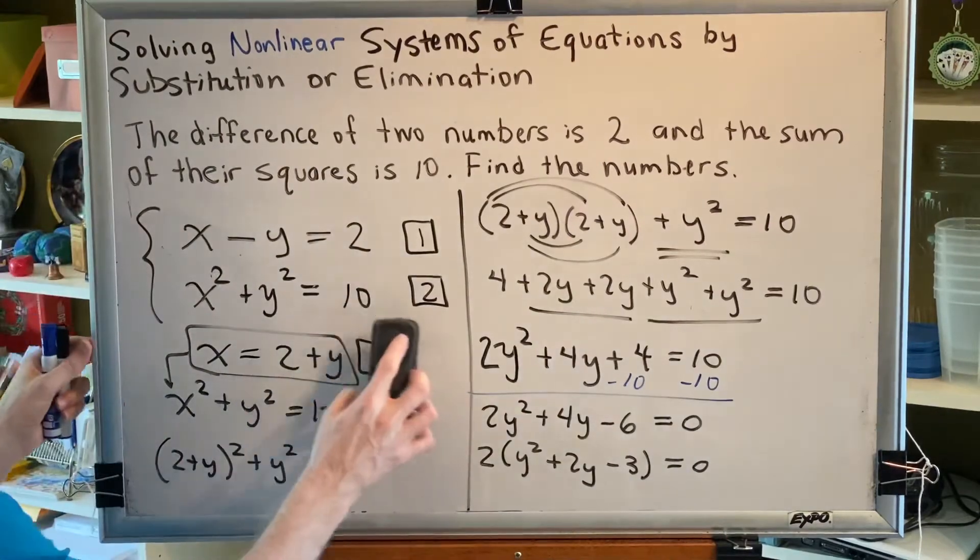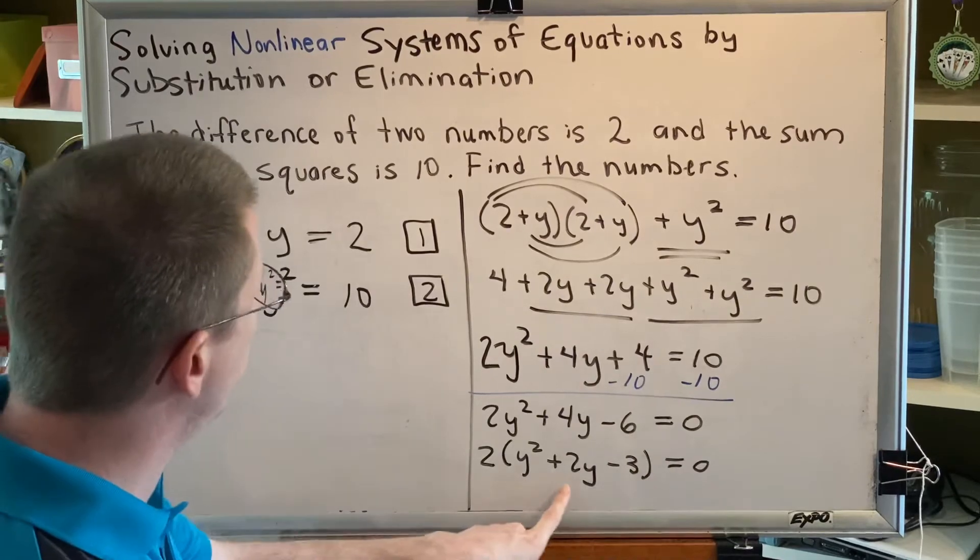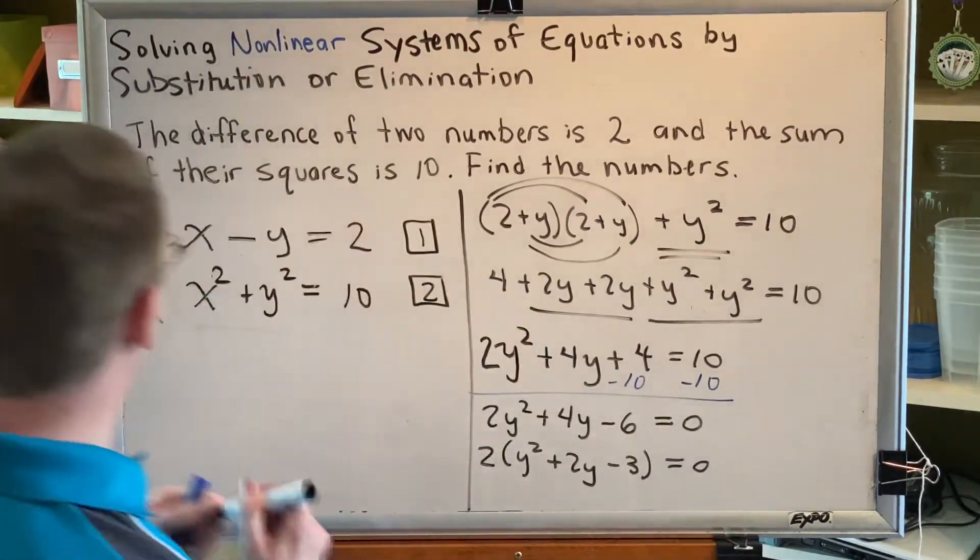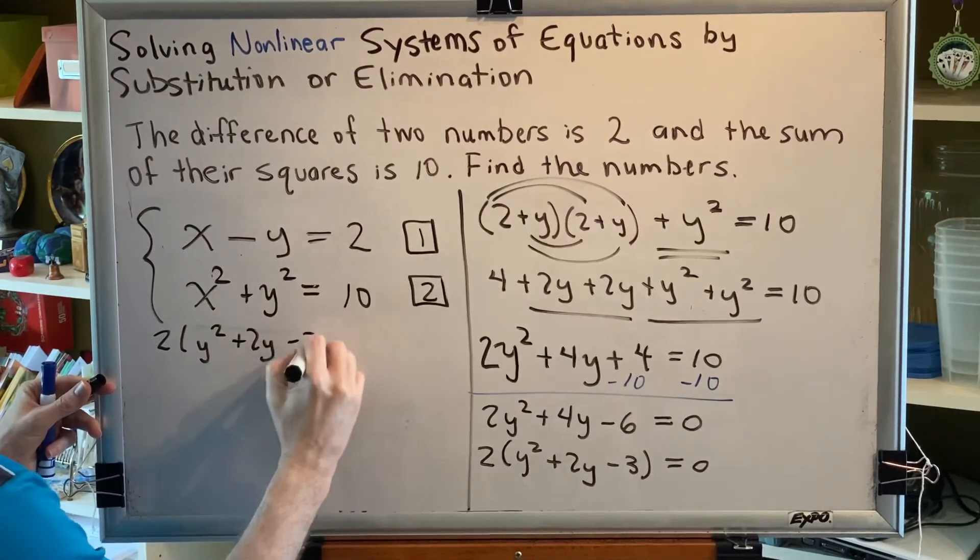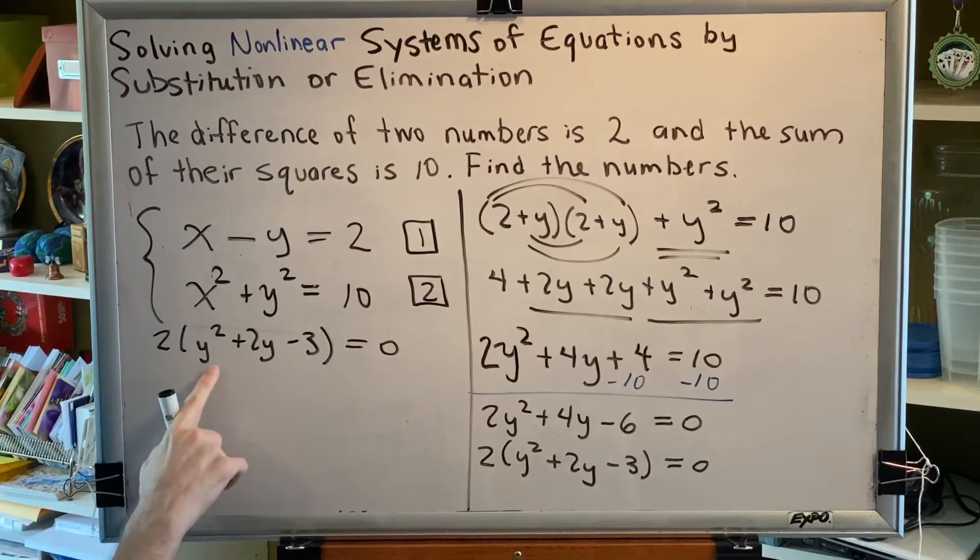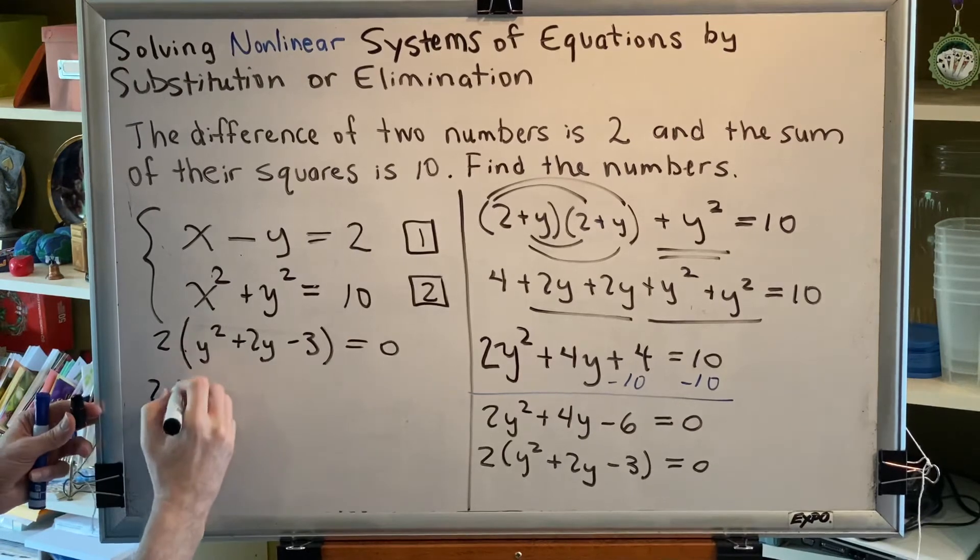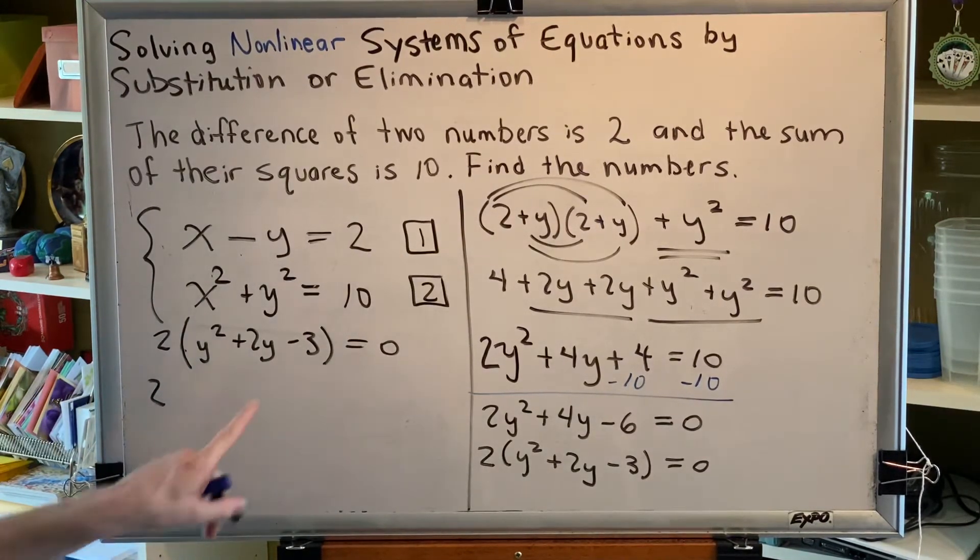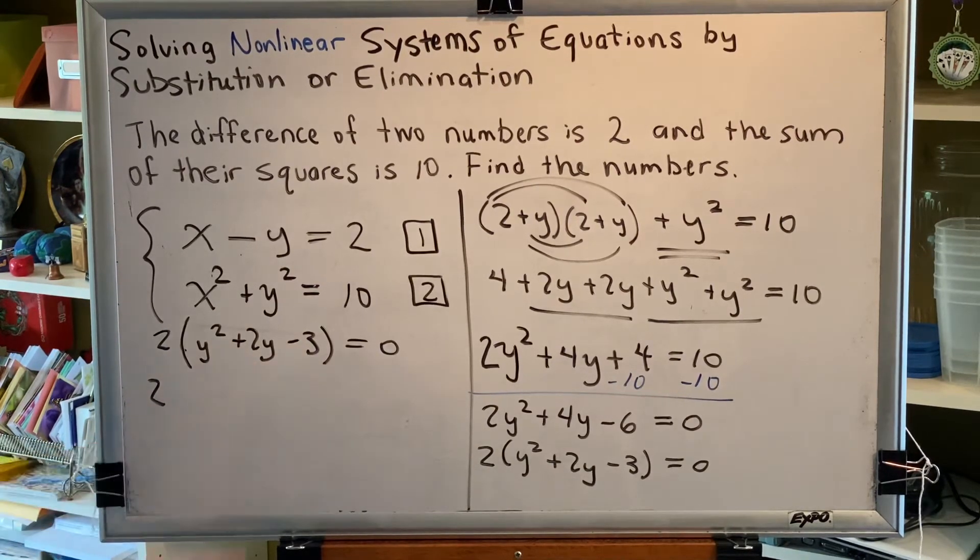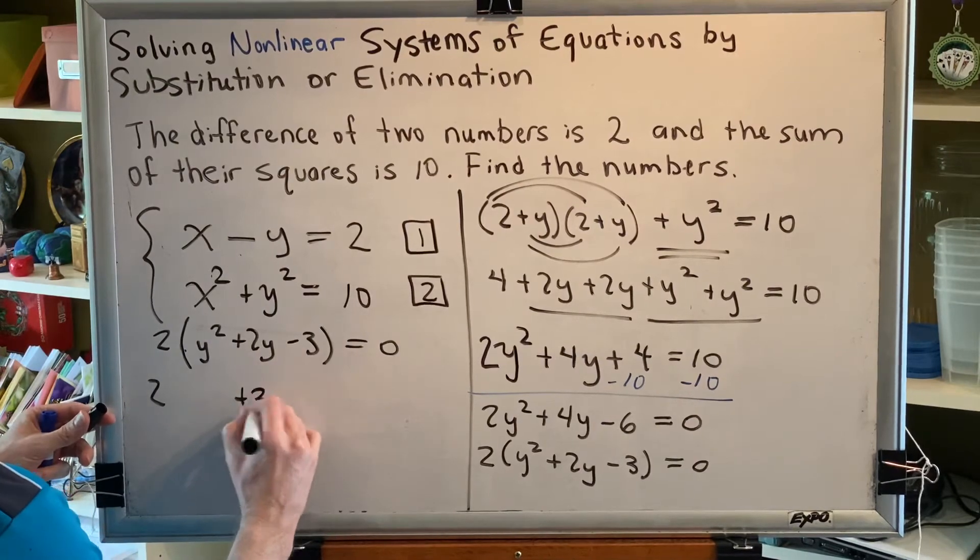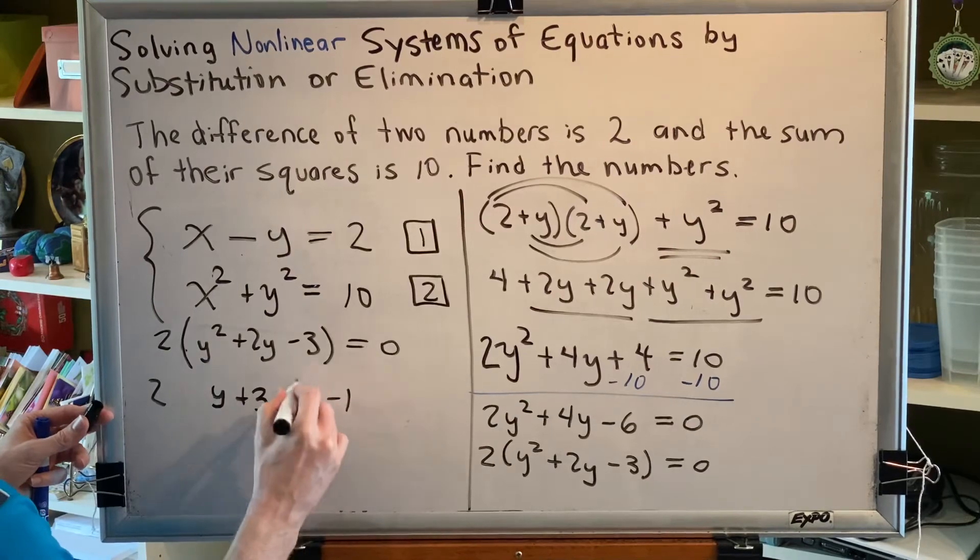Third step, count the terms and use an appropriate method based on the number of terms you have. Well, we have three terms in the parentheses. So we're going to use a method that works for trinomials. And because this is a simple trinomial, the first term in the parentheses has a coefficient of 1. This will actually be a pretty easy trinomial to factor because we just have to come up with two numbers that multiply to make negative 3, but add to make positive 2. So those would be 3 and negative 1. And to factor, we just put a y in front of each one and put them in parentheses.